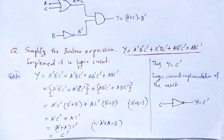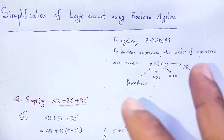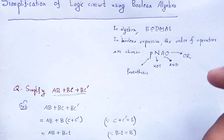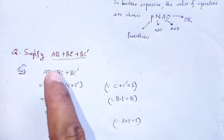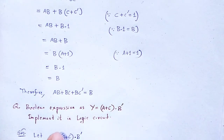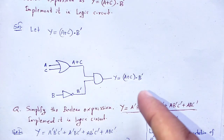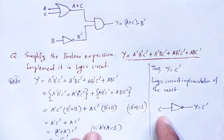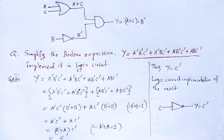In this way, with the help of this video lecture, we understood how to simplify logic circuits using Boolean algebra. We covered the order of operators for Boolean expressions, which is P-N-A-O. We solved questions simplifying Boolean expressions and implemented them through logic circuits, reducing a complex multi-gate circuit to a single NOT gate. Thank you.